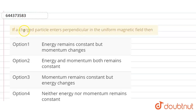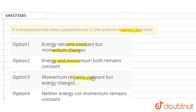Hello everyone. If a charged particle enters perpendicular in a uniform magnetic field, then: option one — energy remains constant but momentum changes; option two — energy and momentum both remain constant; option three — momentum remains constant but energy changes; option four — neither energy nor momentum remains constant.